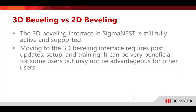The 2D beveling interface in SigmaNest is still fully active and supported. We're not going away from 2D functionality. Simple bevels like your top knife, bottom knife, K bevels, and all that on a single side of a part with corner loops — that is not going away. It's still very easy to use.